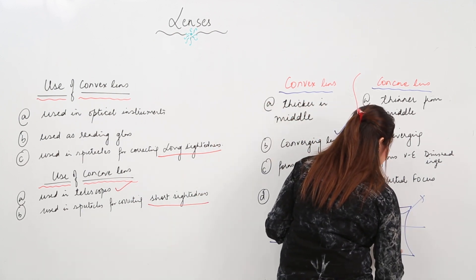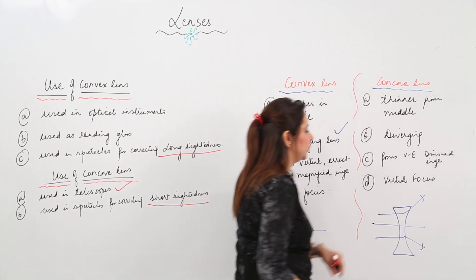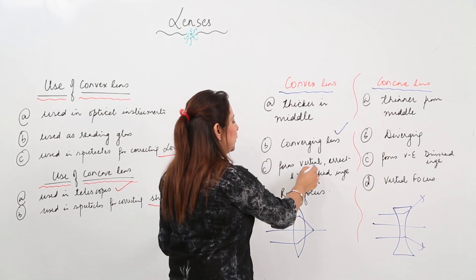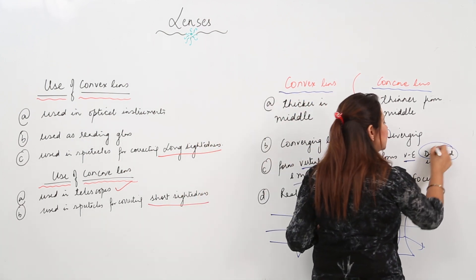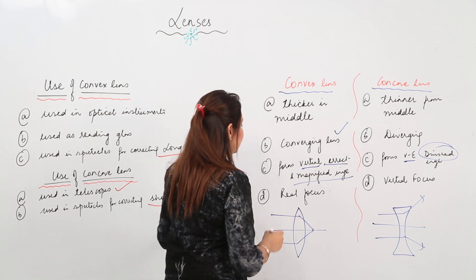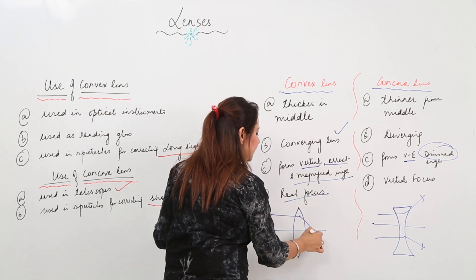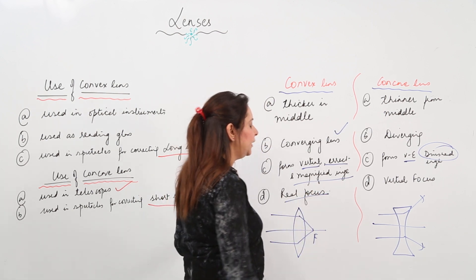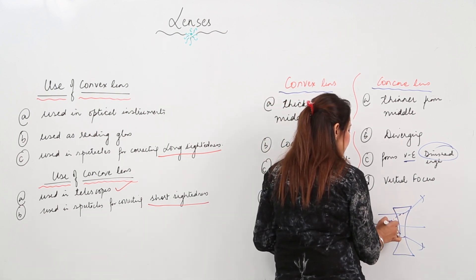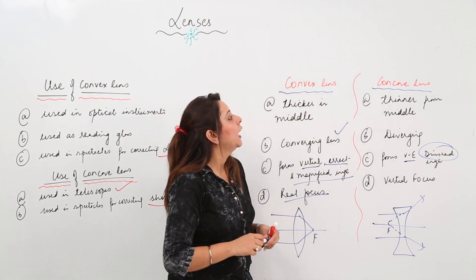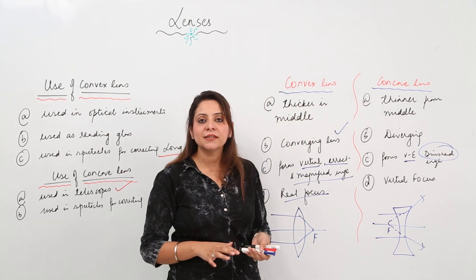Convex lens forms virtual, erect, and magnified image. Concave lens forms virtual, erect image but the images are of smaller size. Convex lens has a real focus - you can see three rays are actually meeting here. For concave lens, the rays are not actually meeting, they appear to meet, so it has a virtual focus. So this is what about the concave lens and the convex lens.